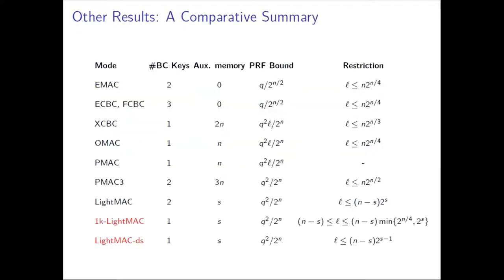If we compare these two results with existing results of PMAC-type constructions, this table represents a comparative summary. The two entries colored red are our contributions. We see that it is certainly a betterment of existing results — for example, considering the number of block cipher keys, both are single-key, and considering the PRF bound, both are L-free bounds for a certain range of L.